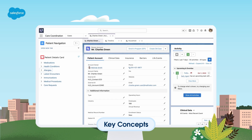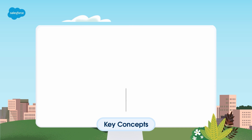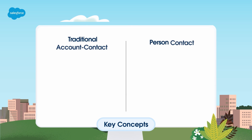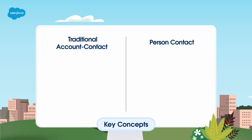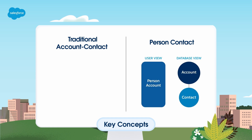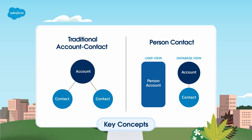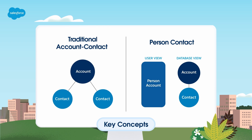Person accounts appear as a single record with both account and contact fields. HealthCloud only models patients and members as person accounts because they are used to represent a single person. The traditional account and contact model is not compatible because a patient or member will not need to be associated with a specific organization.